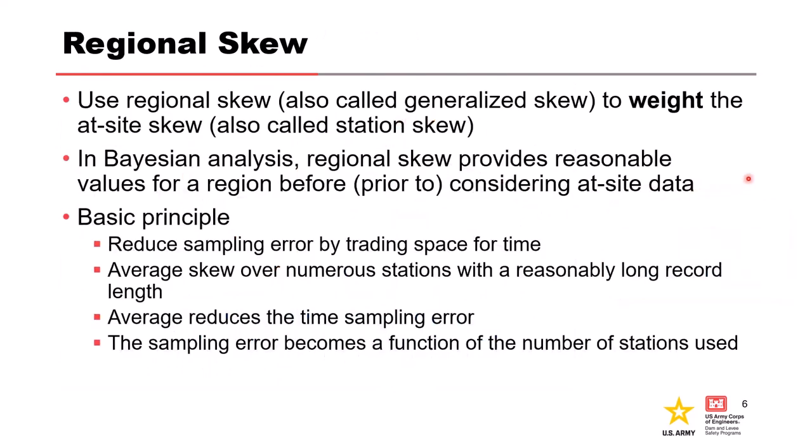We use regional skew — also referred to as generalized skew — to weight our at-site skew, which is also called station skew. In our Bayesian analysis, regional skew provides reasonable values for a region prior to even considering what our at-site data is. The basic principle is reducing sampling error by trading space for time: we average the skew over numerous stations that have a reasonably long record length. The average reduces the time sampling error, and sampling error becomes a function of the number of stations used.